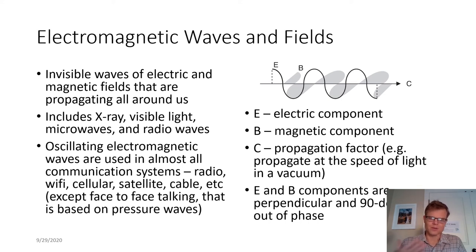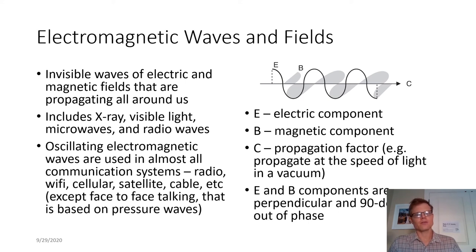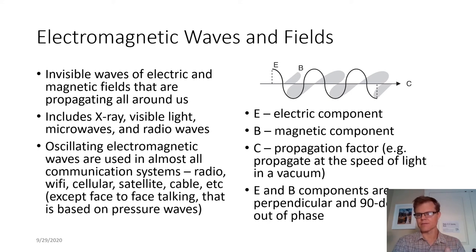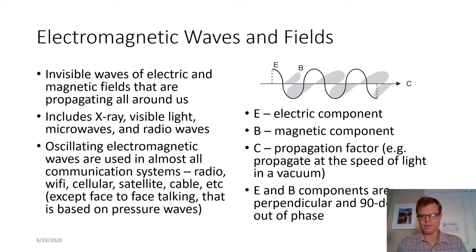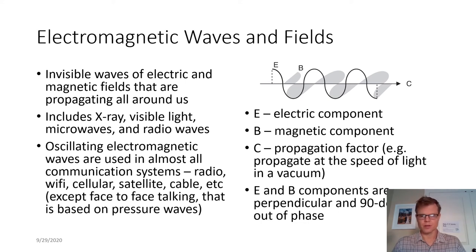Maybe just for us talking face-to-face, it's a pressure wave performing the communication. In electromagnetic waves, this picture shows the electric field E, the magnetic field B, and C on this axis is the propagation factor. In a vacuum, it propagates at the speed of light, but this changes in different media. These components are perpendicular — 90 degrees out of phase. For MRI, we'll mostly focus on the B component, the magnetic component — it is magnetic resonance imaging after all — with some understanding of the electric field component, particularly when talking about our radio frequency coils.